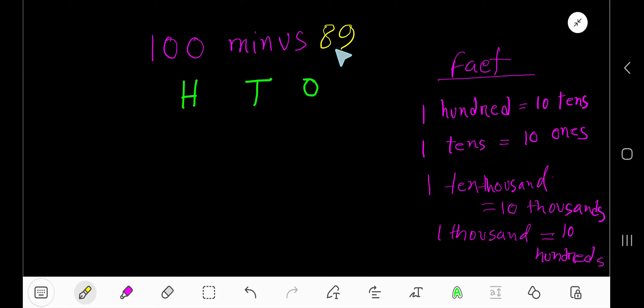100 minus 89. This 0 is in ones place, this 0 is in tens place, this 1 is in hundreds place. This 9 is in ones place, this 8 is in tens place. Now subtract 0 minus 9. You can't subtract from 0.